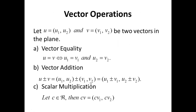Vector operations. Let U be the vector defined by the components U1, U2, and V the vector defined by the components V1, V2. Then we say that U equals V if and only if they are component-wise equal, i.e., U1 equals V1 and U2 equals V2. Vector addition: U plus or minus V is simply component-wise addition or subtraction, giving U1 plus or minus V1, U2 plus or minus V2. Scalar multiplication: if c is a scalar, then c times V equals (cV1, cV2).